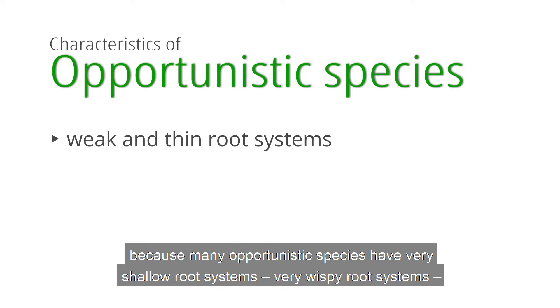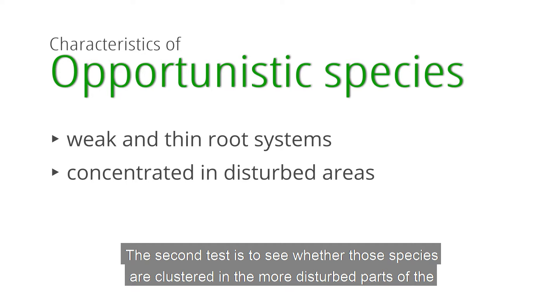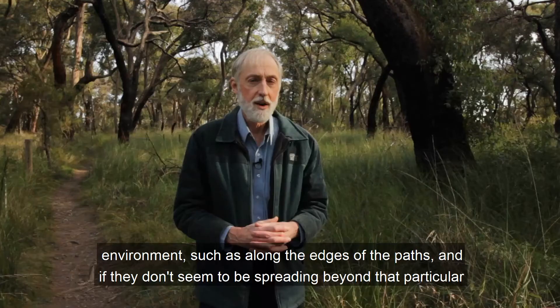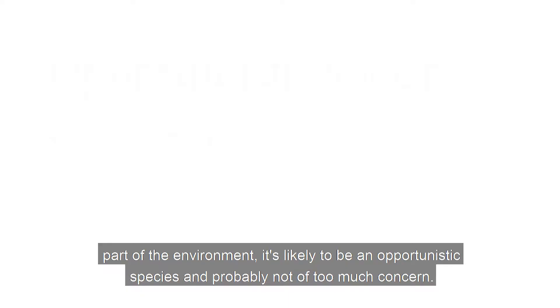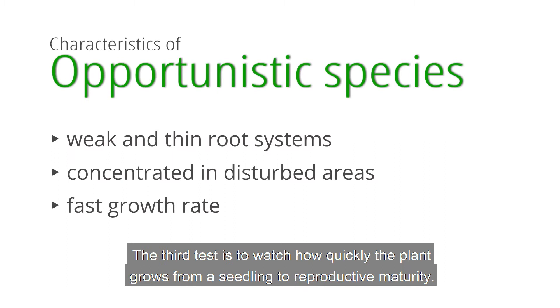The first is to check the root system — many opportunistic species have very shallow, wispy root systems, so when you gently pull them up, as you can see here, there's very little to it. The second test is to see whether those species are clustered in the more disturbed parts of the environment, such as along the edges of paths, and if they don't seem to be spreading beyond that, it's likely an opportunistic species and probably not of too much concern. The third test is to watch how quickly the plant grows from a seedling to reproductive maturity.